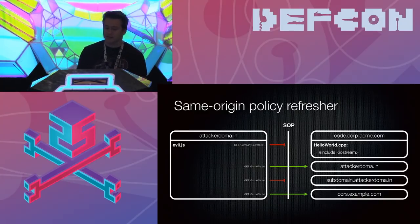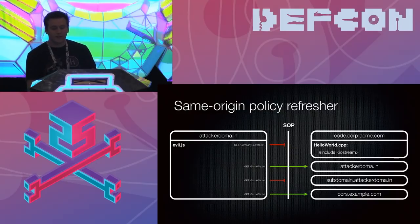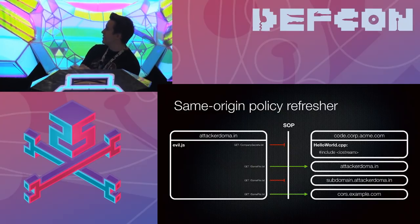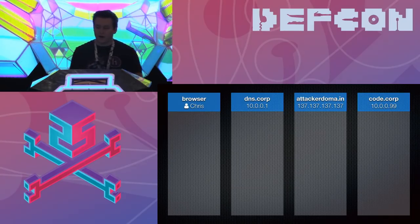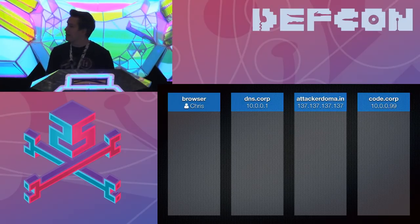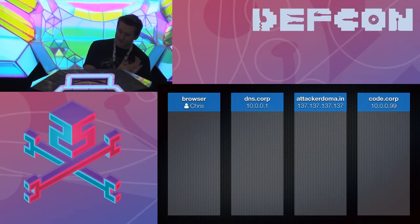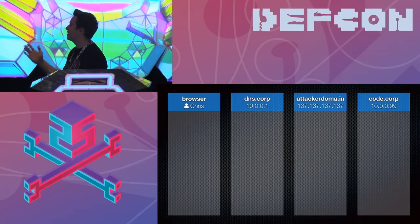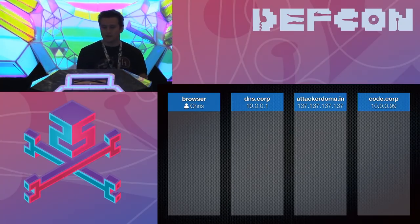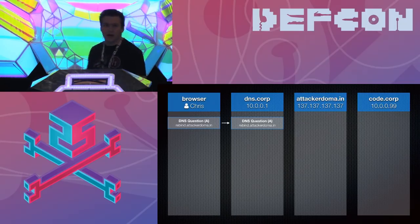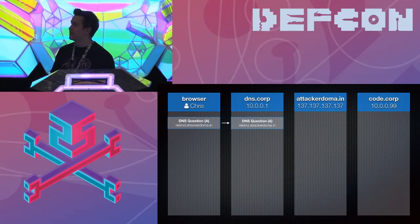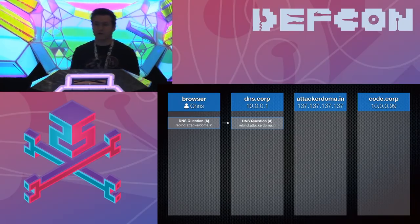So how does DNS rebinding play into all of this? DNS rebinding allows us to trick the browser into making what it believes are same-origin requests that actually reach different servers on the back end. We have a browser run by Chris, our internal DNS server at 10.0.0.1, our attacker server at 137.137.137.137, and our internal code repository at 10.0.0.99. Chris types rebind.attacker domain and hits enter. The browser asks our DNS resolver for help, sending an A query.